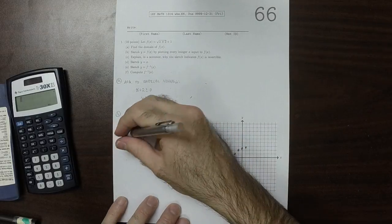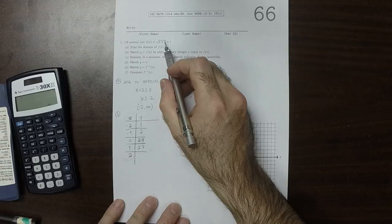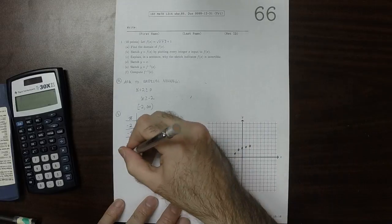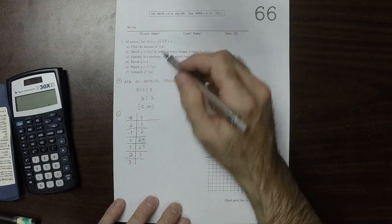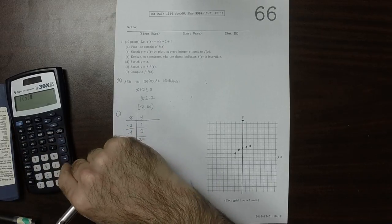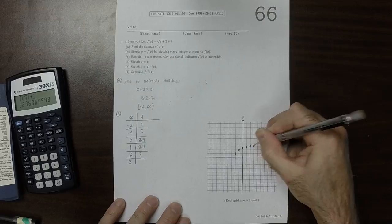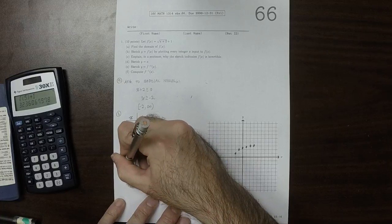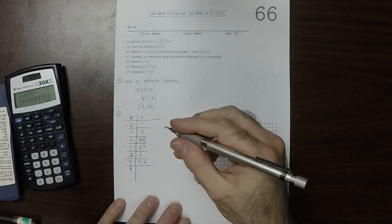If we plug in 2, that's 2 plus 2 is 4, square root of that is 2 plus 1 is 3. If we plug in 3, 3 plus 2 is 5, square root of 5 plus 1, that's about 3.2. And then square root of 6 plus 1, that's about 3.4.